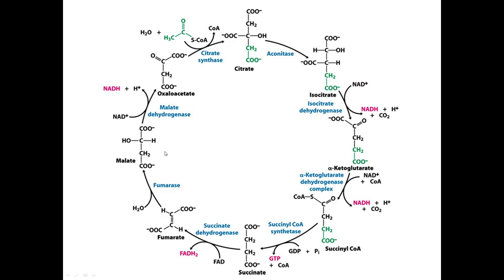In the very last step — step eight, malate dehydrogenase — we oxidize the secondary alcohol of malate into the ketone using NAD+ to NADH. A secondary alcohol becomes a ketone, and we're back where we started with oxaloacetate. Going around the cycle again, we'll add two more carbons, make citrate, turn it into isocitrate, lose a pair of carbons, and go around over and over as long as new acetyl-CoA keeps entering.